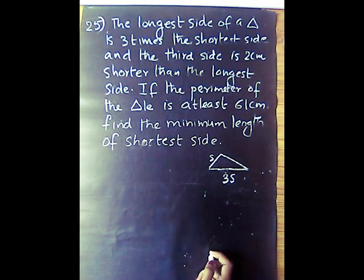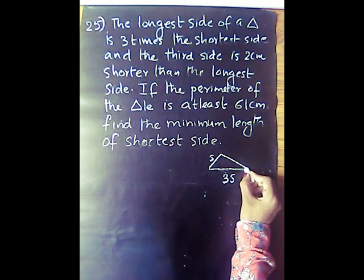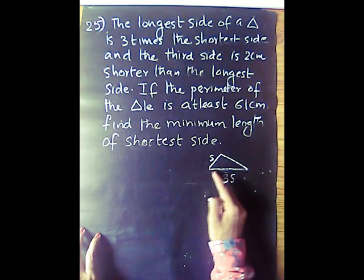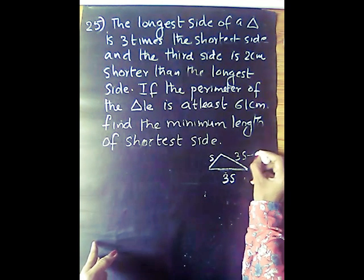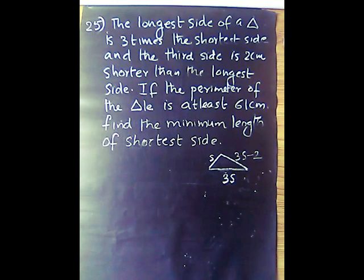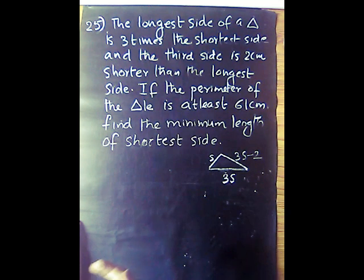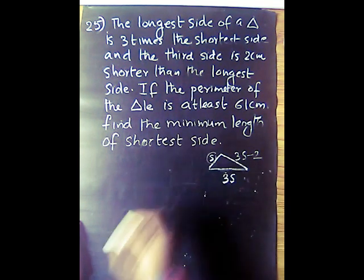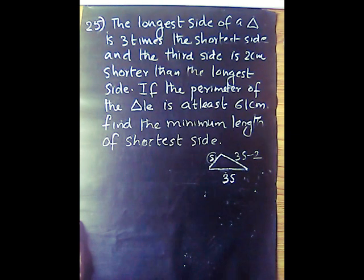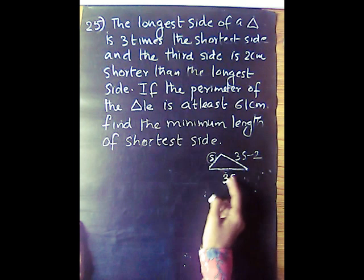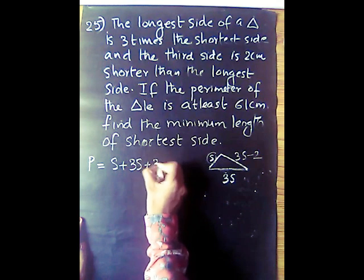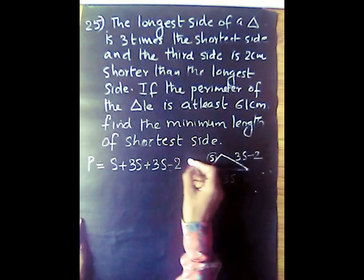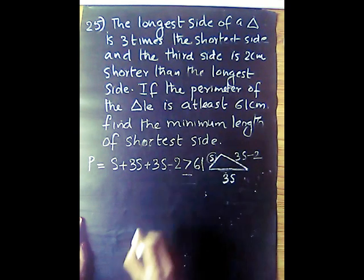The third side is 2 cm shorter than the longest side, so the third side is 3s minus 2. The perimeter is at least 61 cm. So perimeter equals s plus 3s plus 3s minus 2, which is greater than or equal to 61.